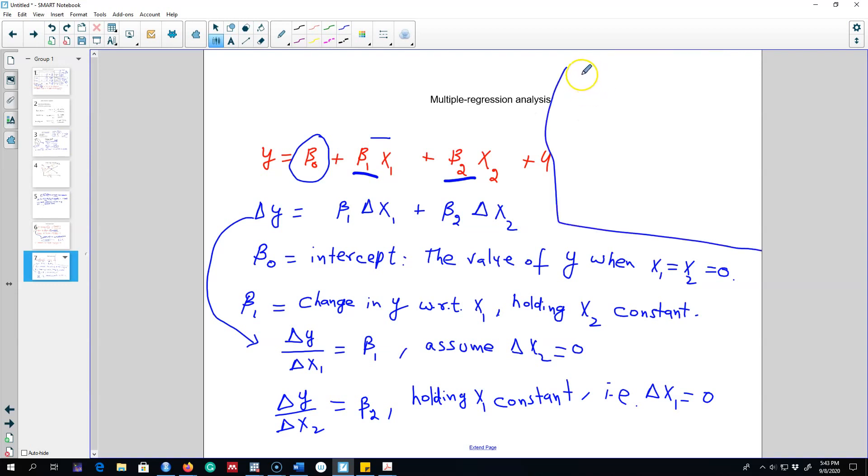One crucial assumption that we made in the case of a simple linear regression model was the exogeneity of these x1 and x2 variables. The assumption that we made even for the simple linear regression model was that u and x1 are uncorrelated.